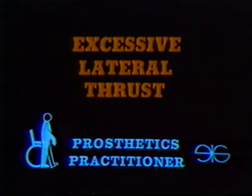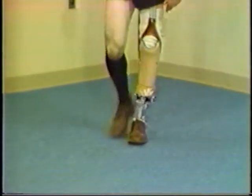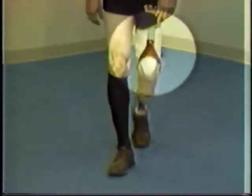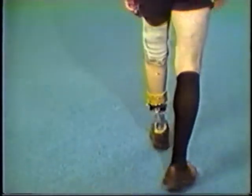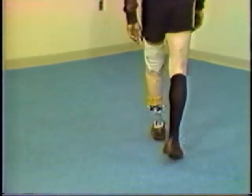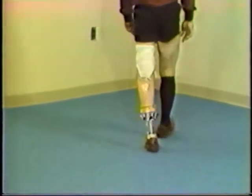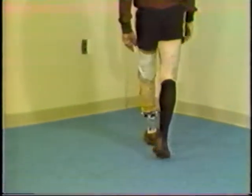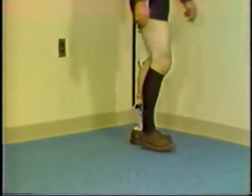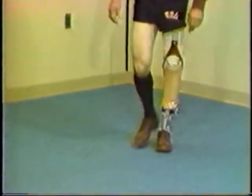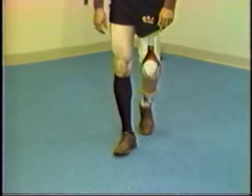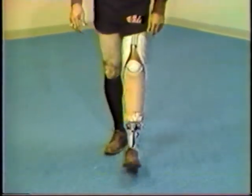A second deviation you may observe is excessive lateral thrust. If the lateral thrust is too great, the knee will be forced in a lateral direction. Watch the knee carefully as we demonstrate excessive lateral thrust. This situation can be caused by the foot being too far inset. It is also possible that the socket ML may be too large, causing the knee to be unstable. The amputee may report too much pressure on the medial side of the knee with excessive lateral thrust.